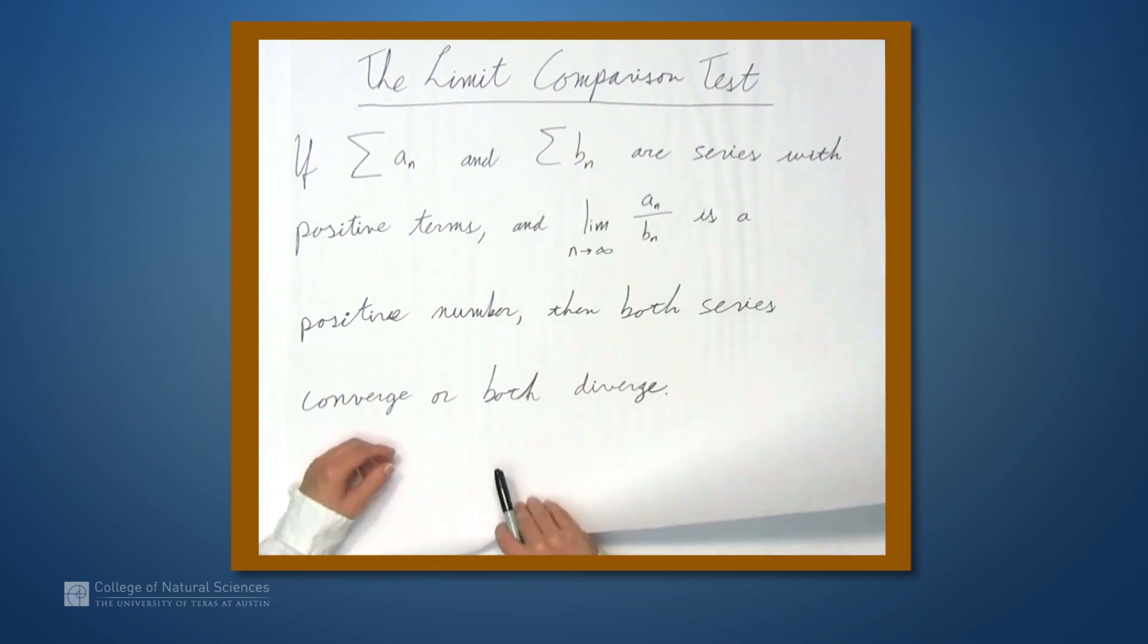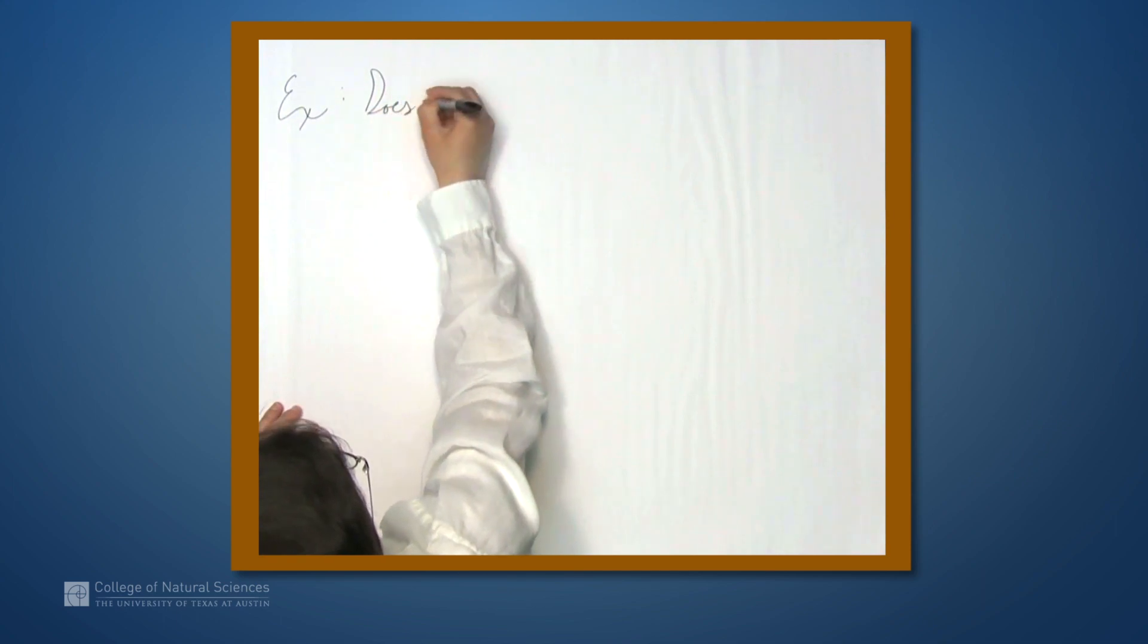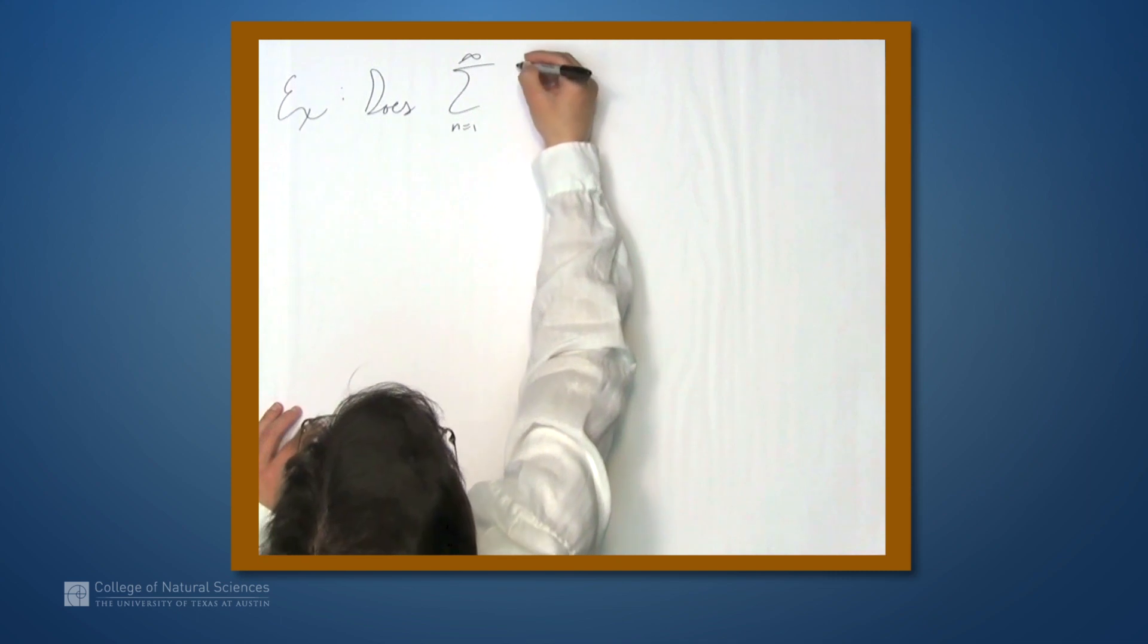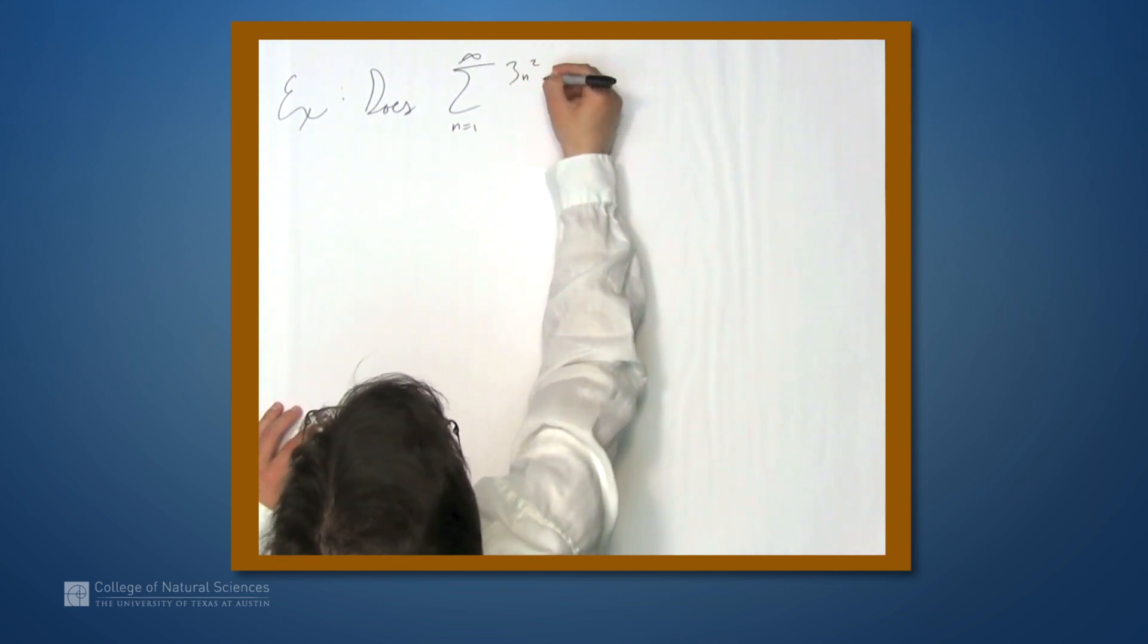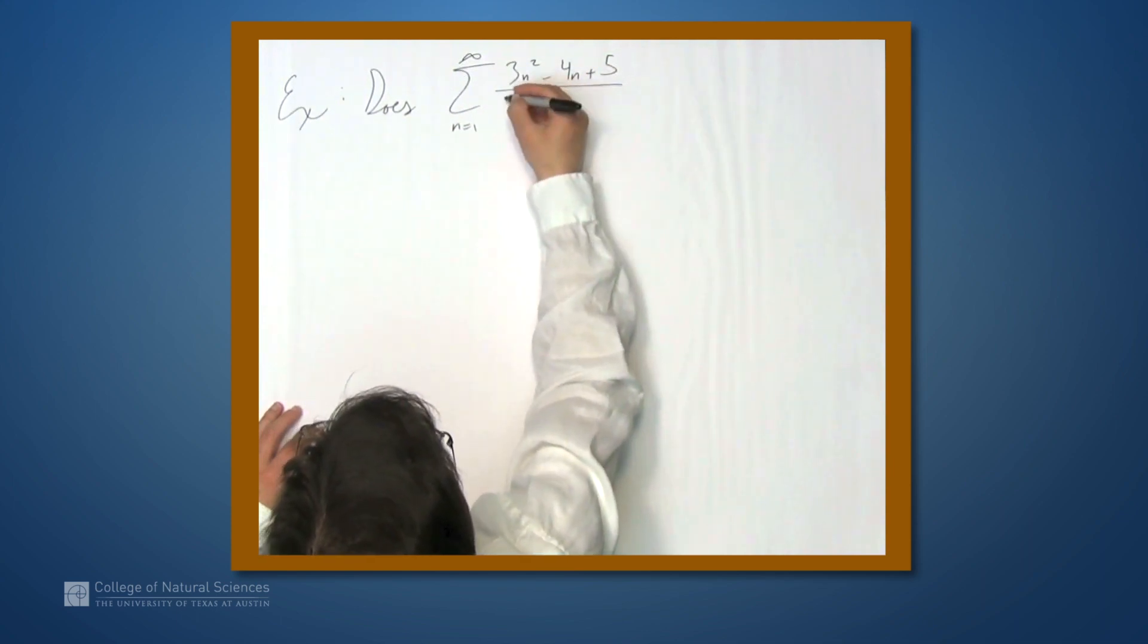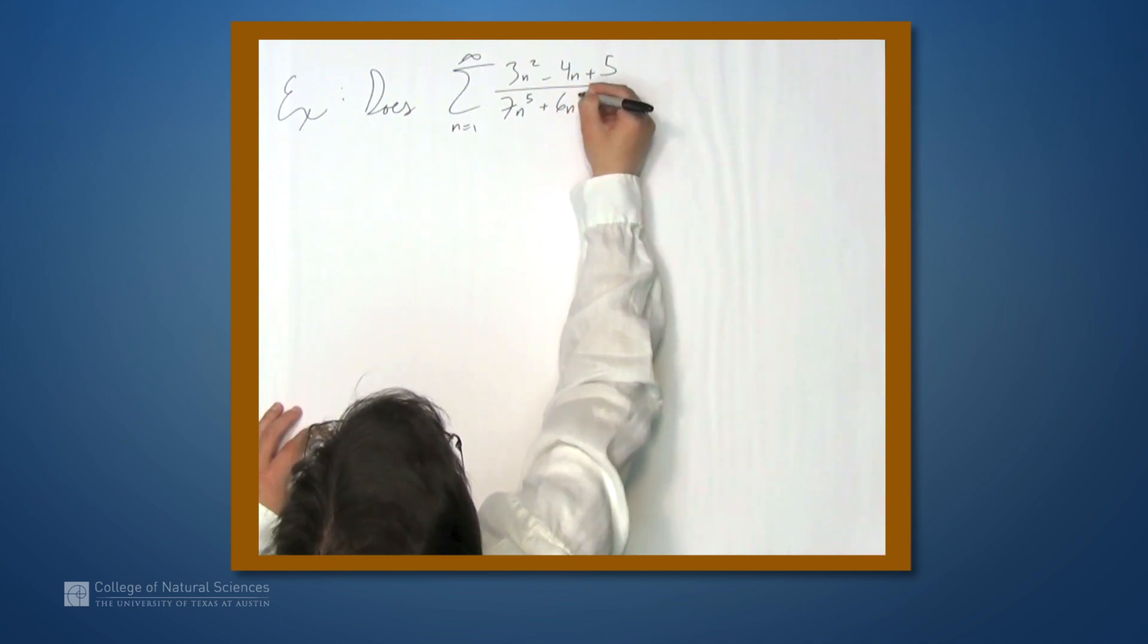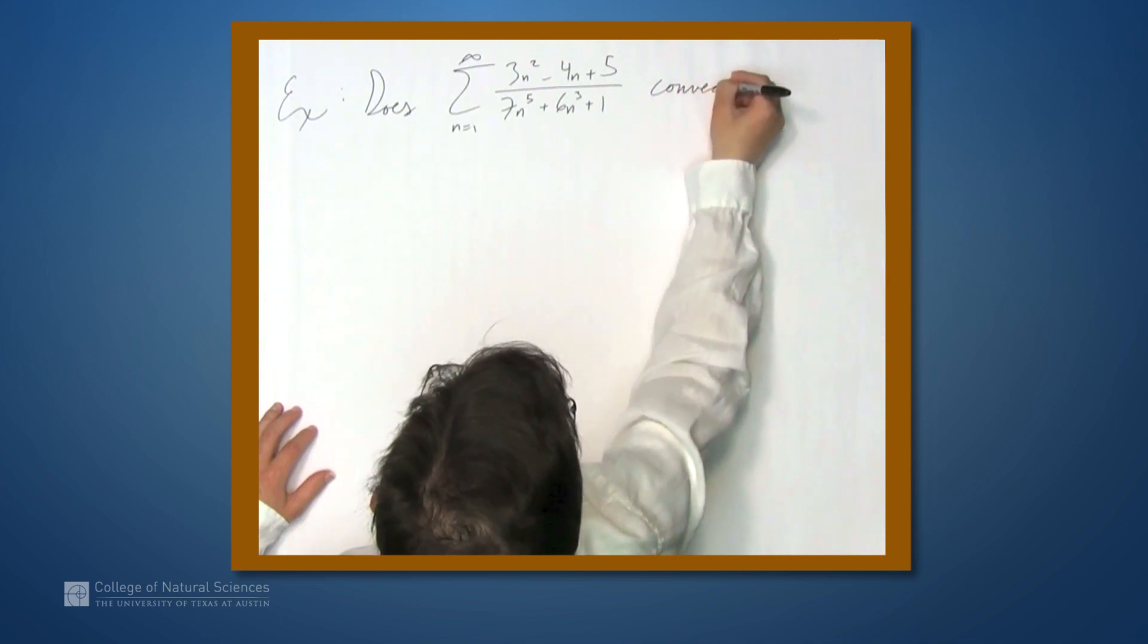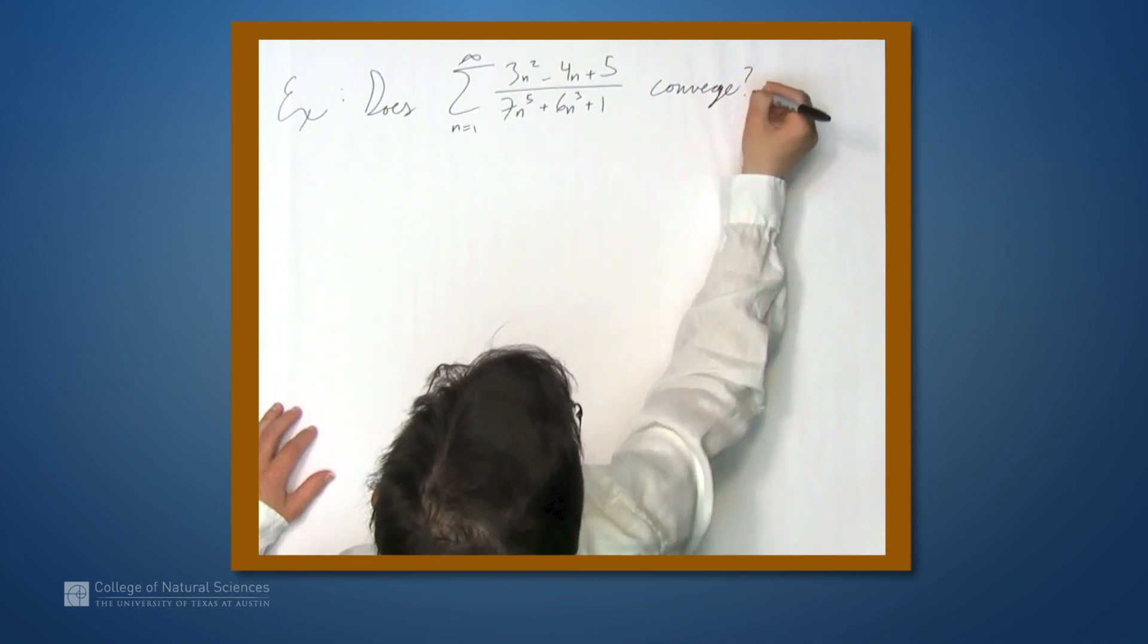Let's take a look at an example. Does the series n equals 1 to infinity, 3n squared minus 4n plus 5 over 7n to the fifth plus 6n cubed plus 1, converge?